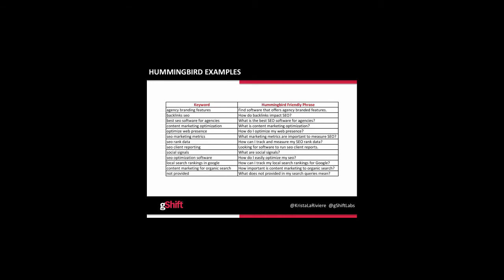Here are some Hummingbird examples using keywords that we optimize for here at G-Shift. You can see what a corresponding Hummingbird-friendly phrase could look like — there could be multiple around each keyword. For example, the keyword 'agency branding features' might correspond to the phrase 'find a software that offers branded features' or 'agency branded features.' For 'backlinks SEO,' a corresponding phrase might be 'How do backlinks impact SEO?' So instead of a plain keyword, we look at a need-based or conversational phrase.